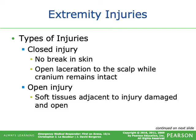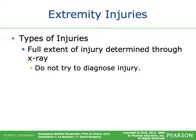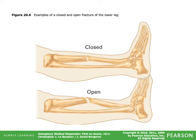Types of injuries: A closed injury has no break in the skin — this can include a laceration to the scalp while the cranium remains intact. An open or soft tissue injury involves soft tissues adjacent to the injury being damaged and open. The full extent of any injury is determined through x-ray; do not try to diagnose — just treat the signs and symptoms. In a closed fracture the skin is not broken; in an open fracture the bone protrudes through the skin.